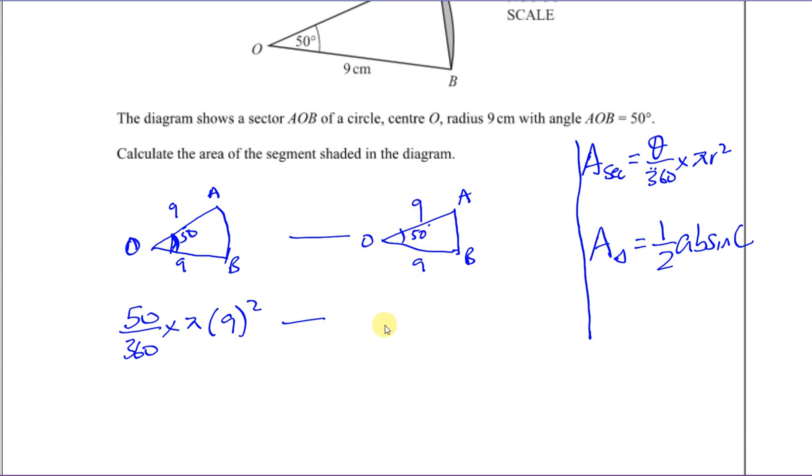If I do the area of the sector minus the area of the triangle, which is ½ times 9 times 9, which is like 9², times the sine of the angle 50, then I should get the area of the segment.